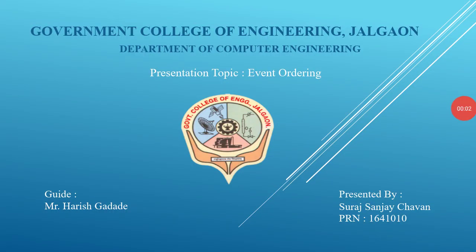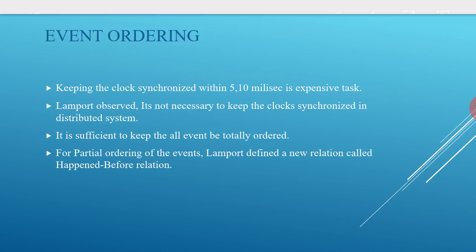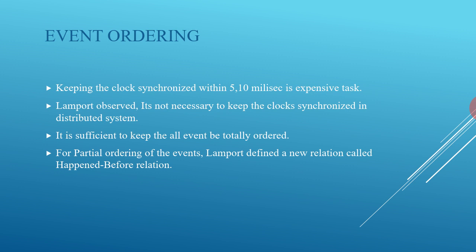Hello friends. Today we are going to learn about event ordering, which is an important topic in synchronization. For a computer, even one millisecond of time is a recognizable amount, so keeping clocks synchronized within 5 to 10 milliseconds is an expensive task. Lamport observed it is not necessary to keep clocks synchronized in a distributed system; it is sufficient to keep all events totally ordered or partially ordered.